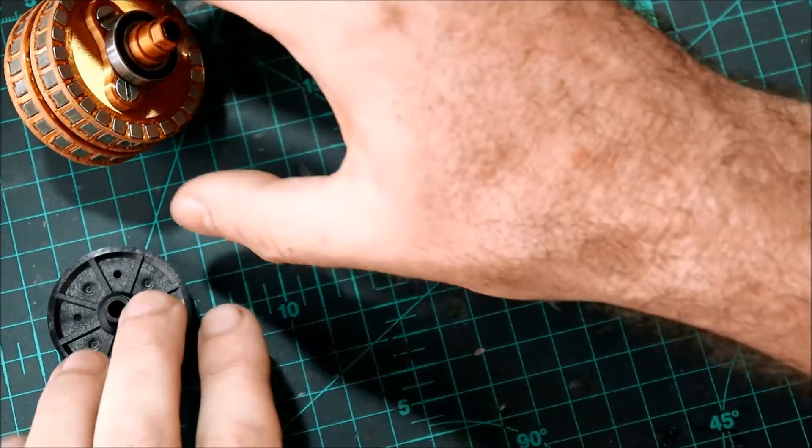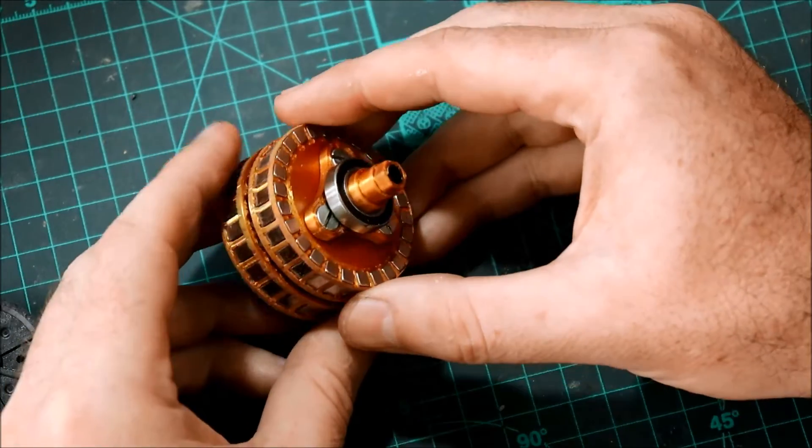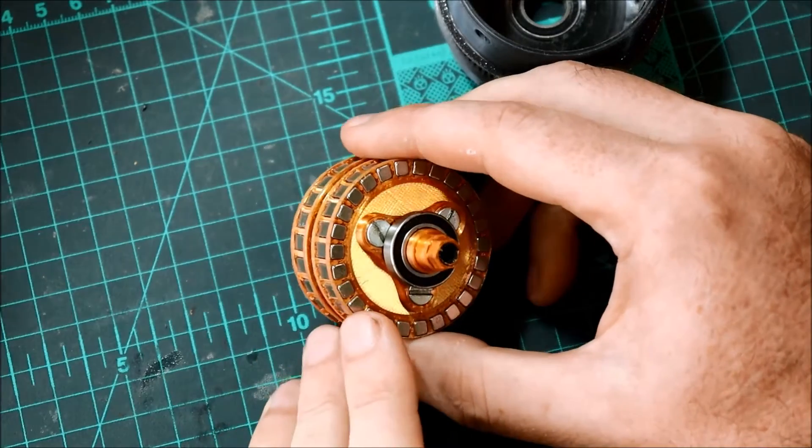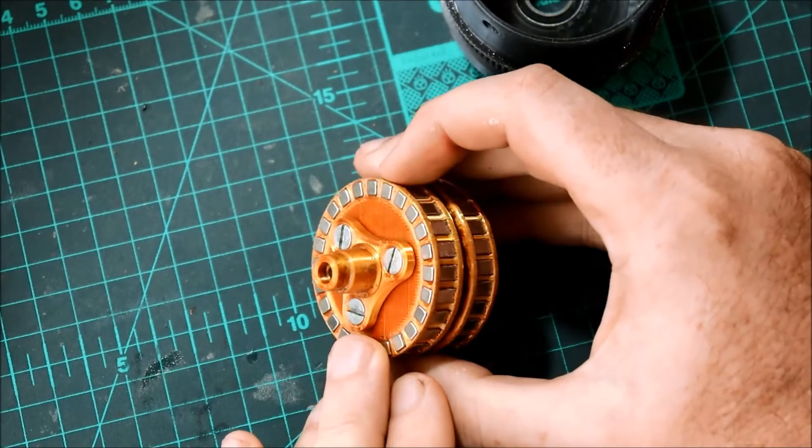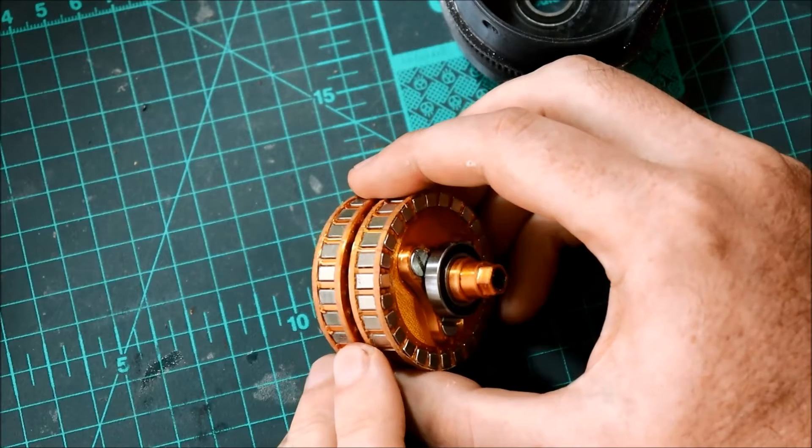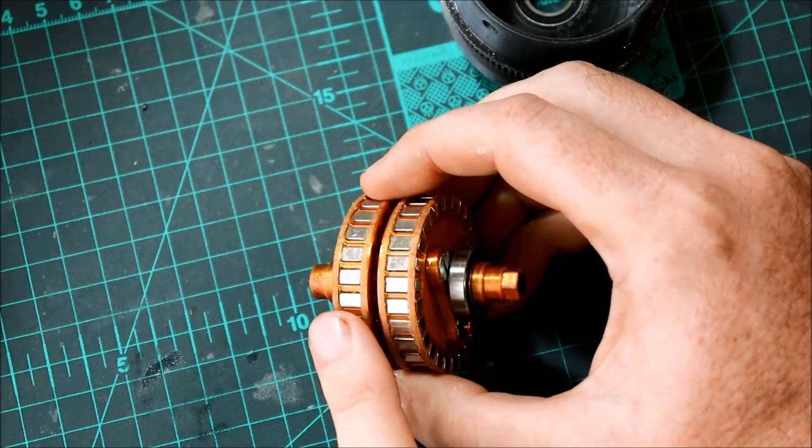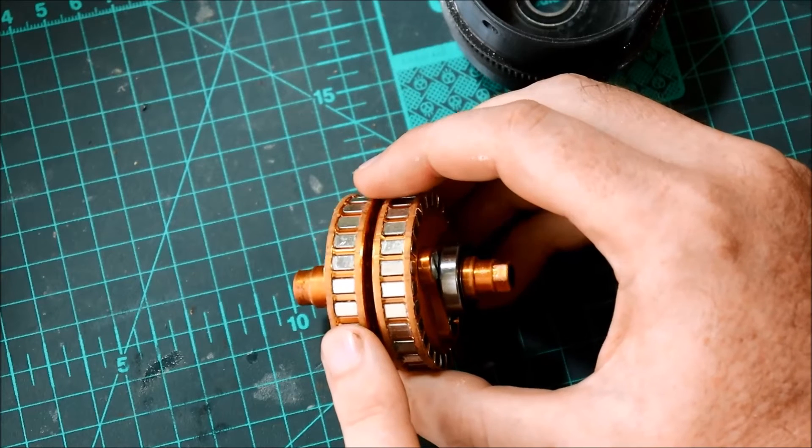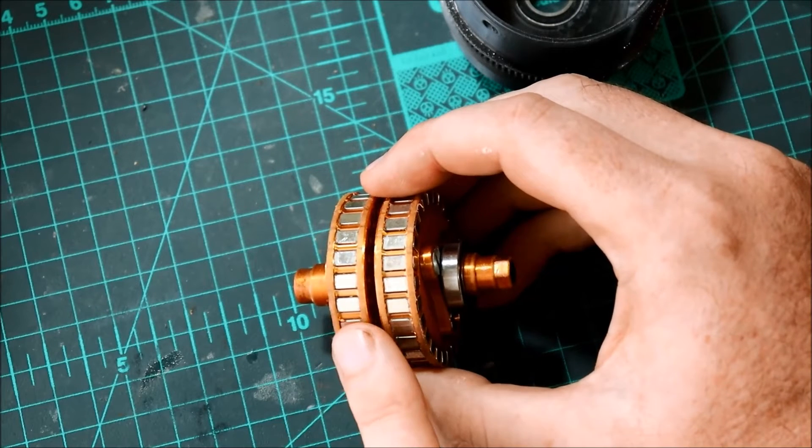In a magnetic gear the actual size of the gear does not matter. What matters is the number of magnets on each gear. This gear has 26 magnets. This side only 24. So the ratio is 13 to 12. In other words in percentage terms 52 and 48. And that is also the ratio in which the torque is split.